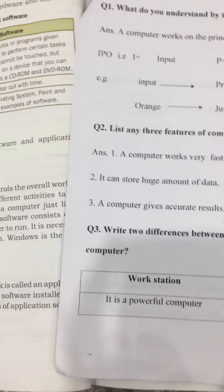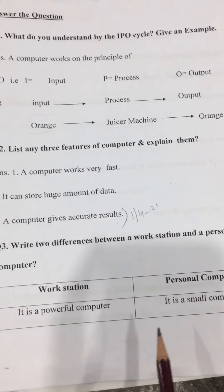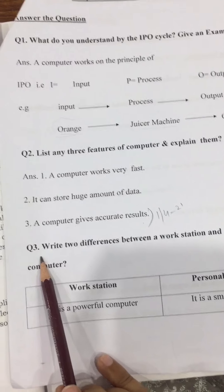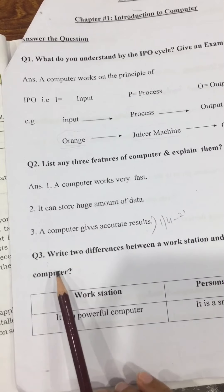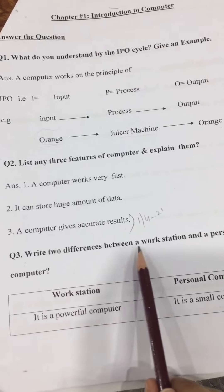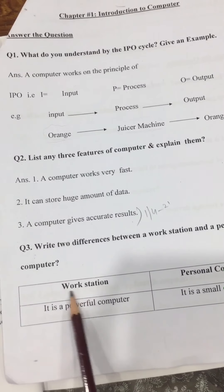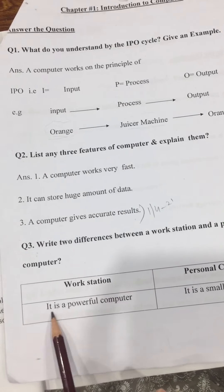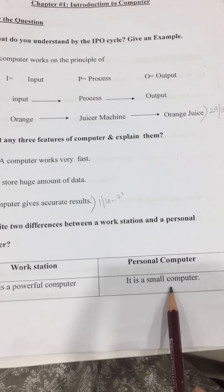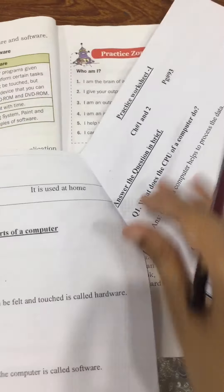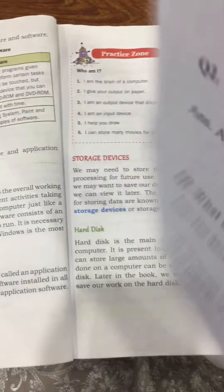Along with this reading of page number 12 and 13, you have to write and learn question number 3 of chapter number 1: 'Write two differences between a workstation and a personal computer.' A workstation is a powerful computer, and a personal computer is a small computer. The second features are given on the next page, about workstation.